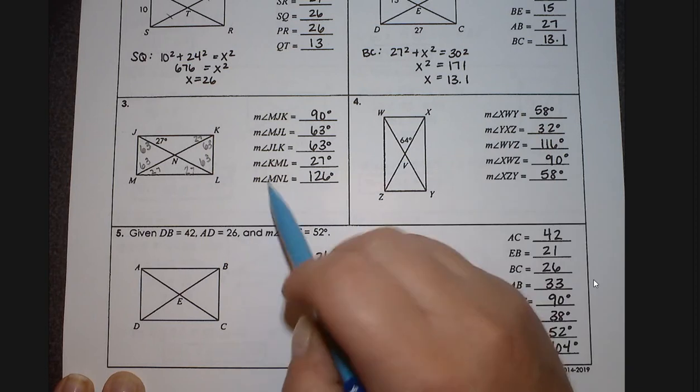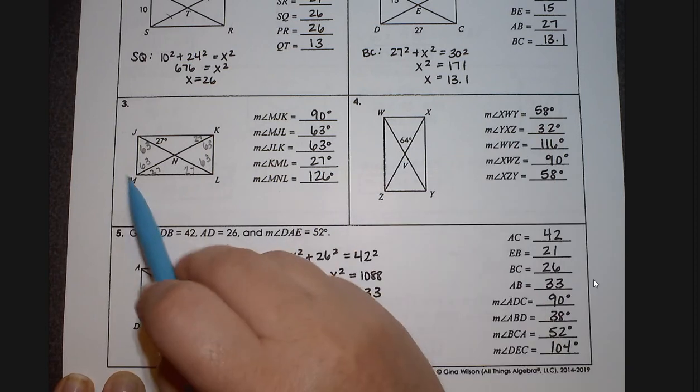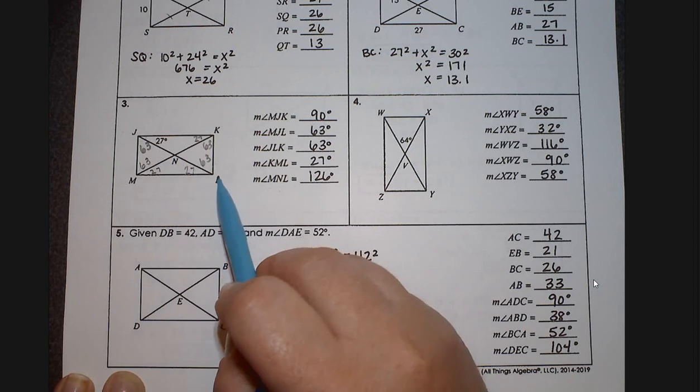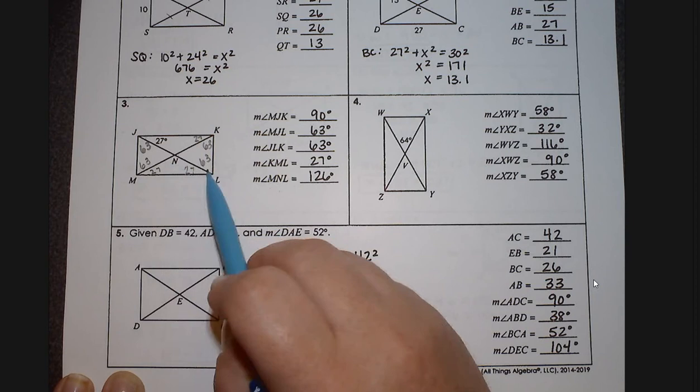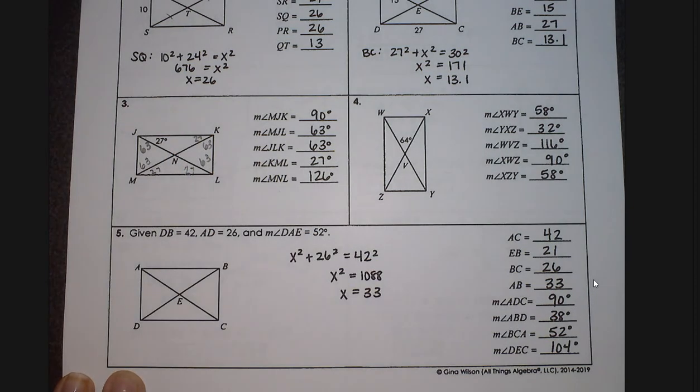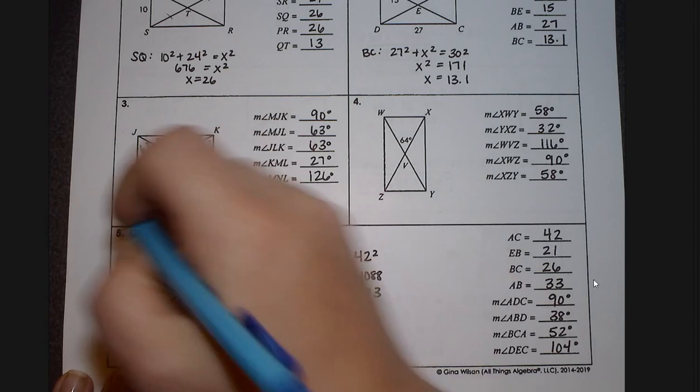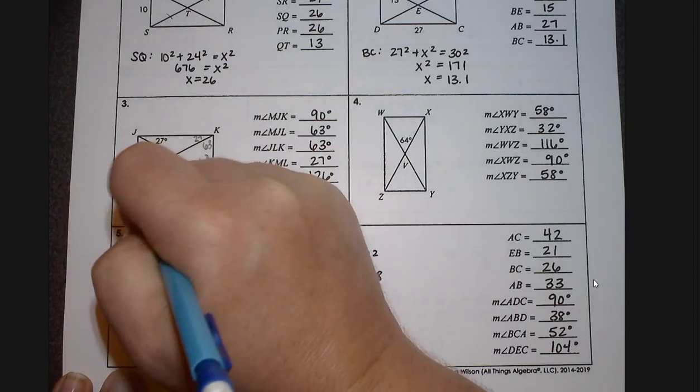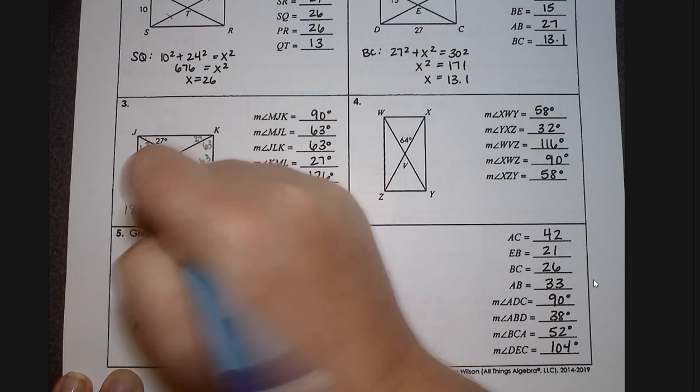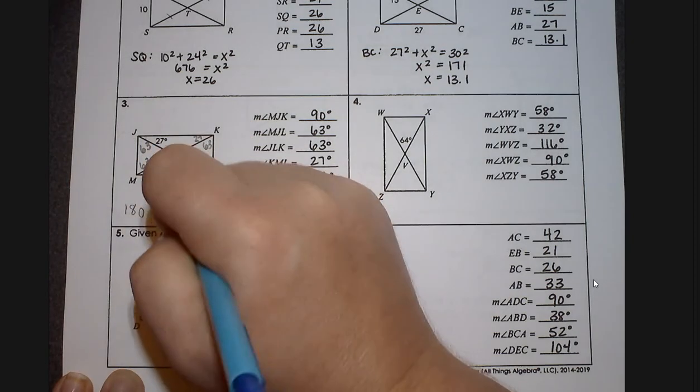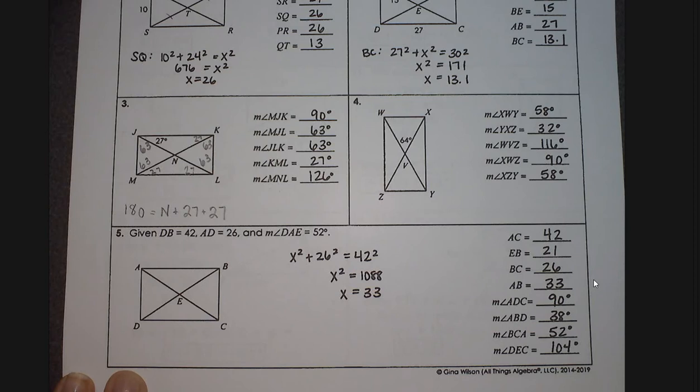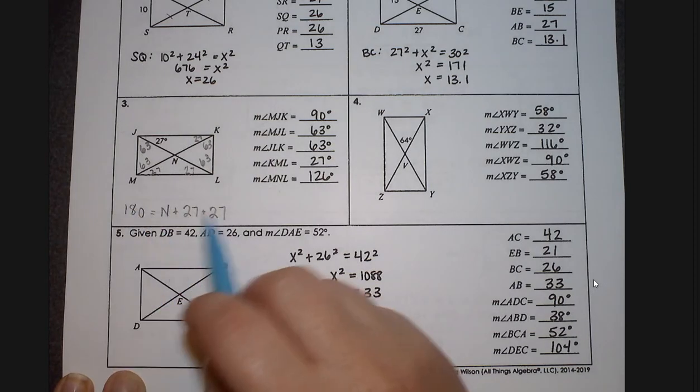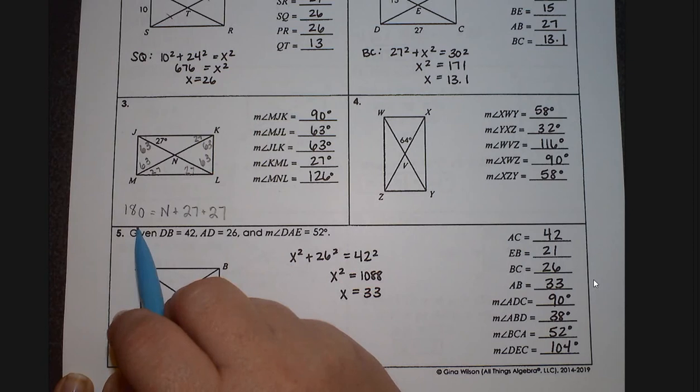And then, MNL is going to be this angle right in here. So I need to figure out how I'm going to calculate that angle. Well, do you see that it forms a triangle? And how many degrees are in a triangle? So right now, we've got a triangle that's 180 degrees. I don't know, I'm going to call that N. I don't know how big that is, but I do know that the other two angles are 27. So when I go through this, I'm going to add my 27 and 27.